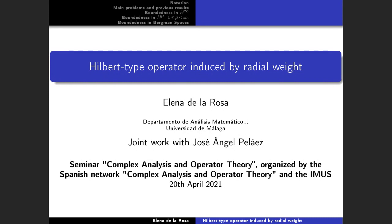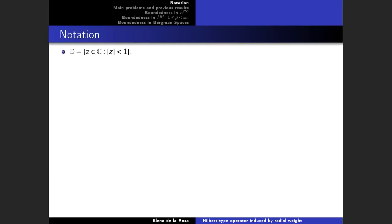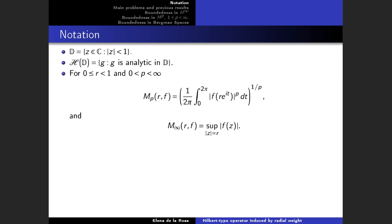I'm going to talk about the Hilbert-type operator induced by a radial weight, a joint work with José Ángel Peláez. At first I'm going to introduce some notation. We denote by D the unit disk and by H(D) the analytic functions on D. We define the integral mean of order p for an analytic function f by this expression, and the integral mean of order infinity by the supremum.